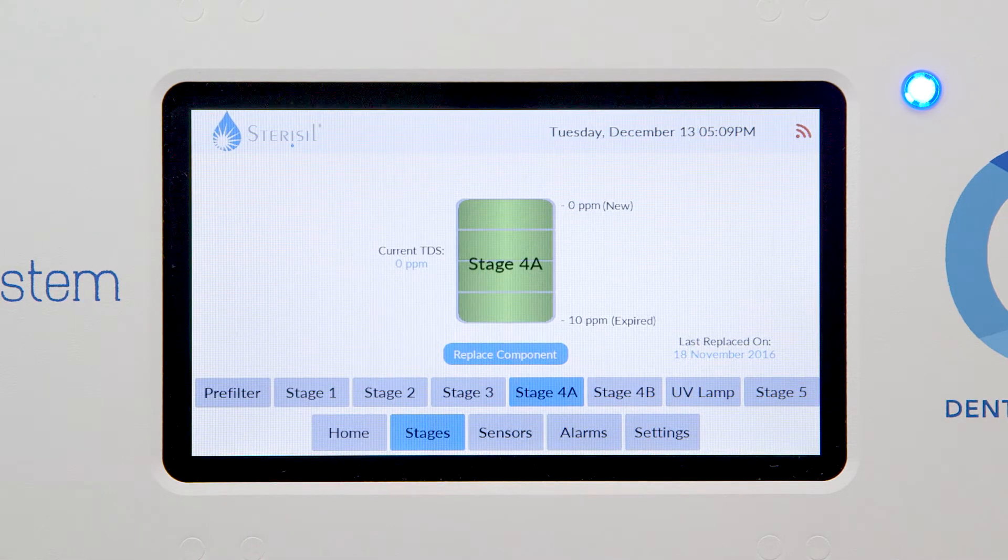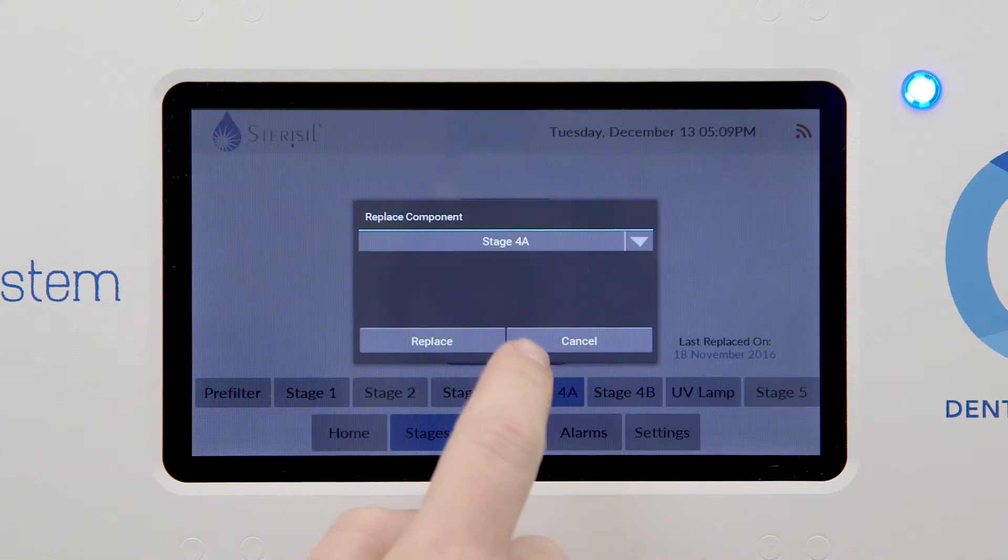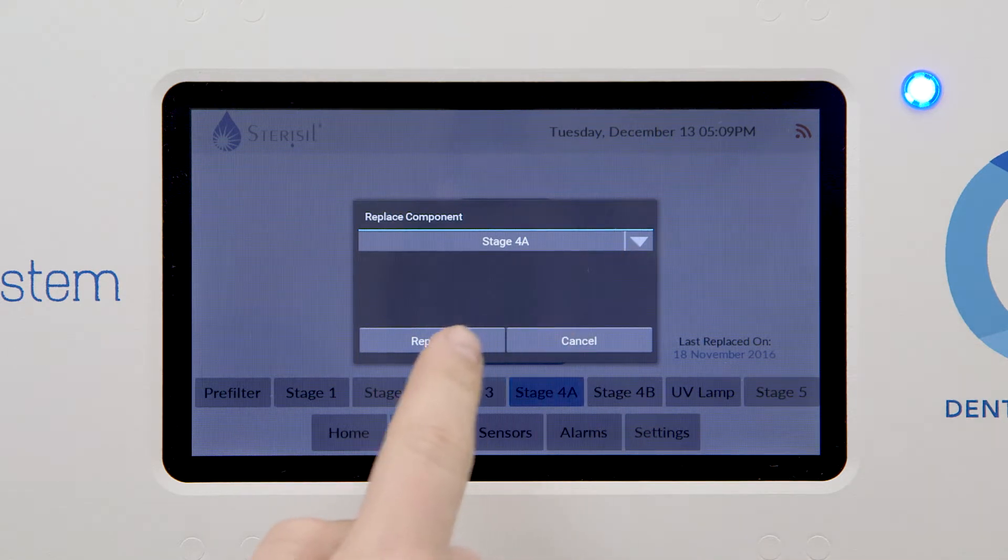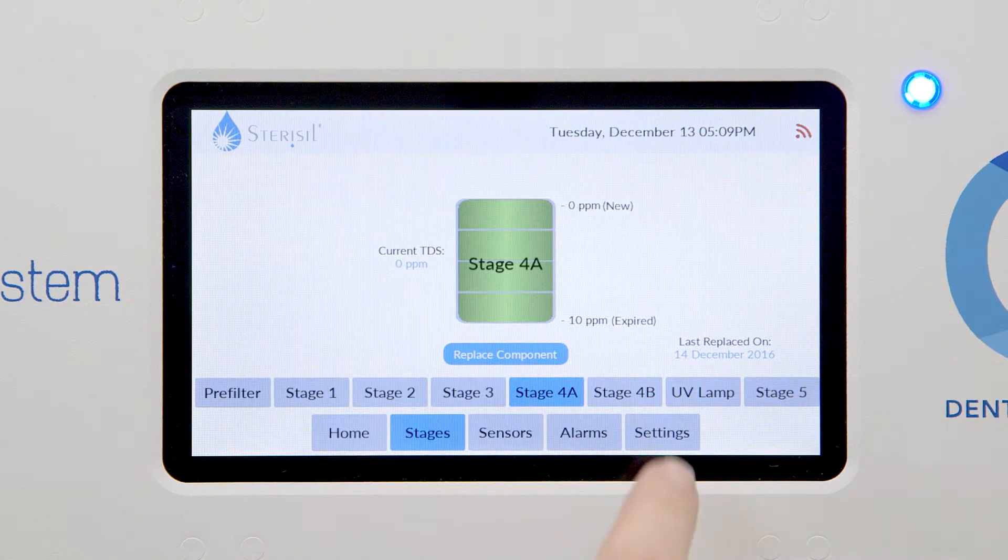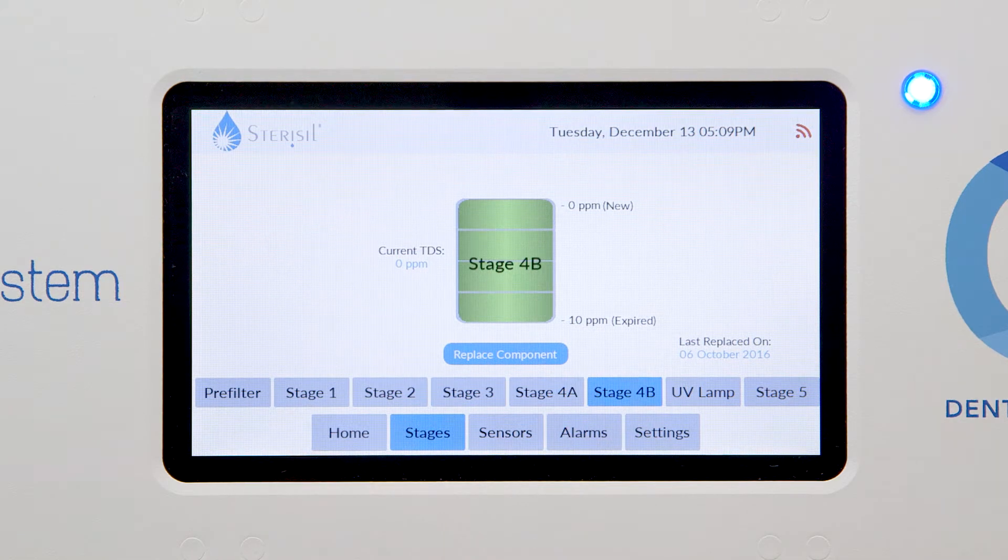Stage four's lifespan is a function of water quality. The alarm will sound if water quality reaches above 10 parts per million on the lead cartridge. No resetting is required upon initial installation.